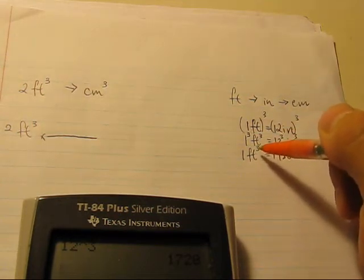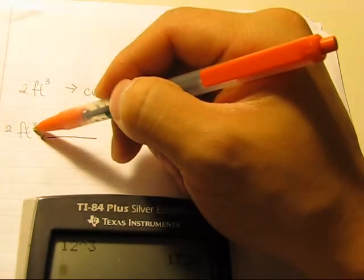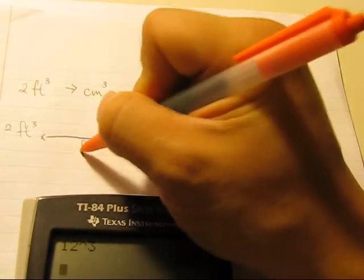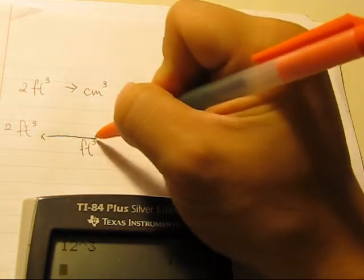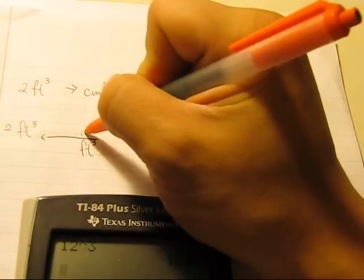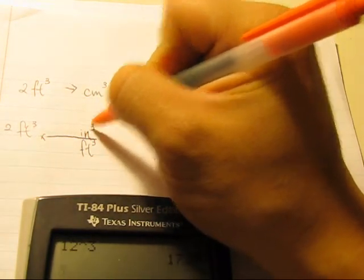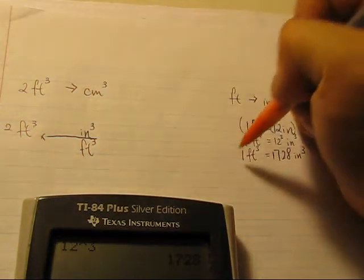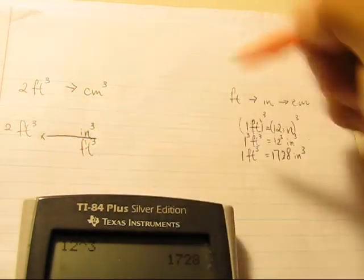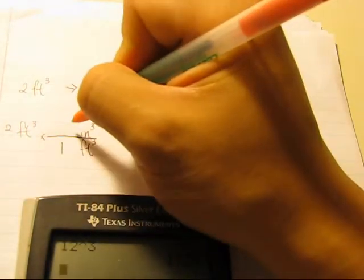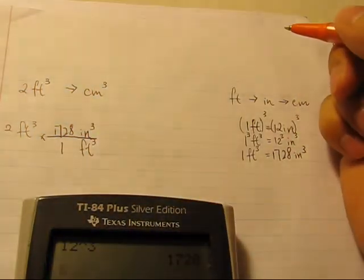Now we have the cubic foot to cancel out this unit. Put a cubic foot in the bottom and cubic inches on top. So again, what are these two numbers? Go back to the relationship: one cubic foot and seventeen twenty-eight cubic inches.